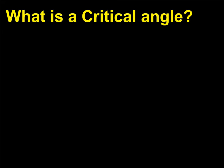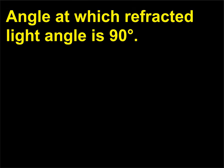What is a critical angle? The critical angle is the angle at which the refracted light angle is 90 degrees.